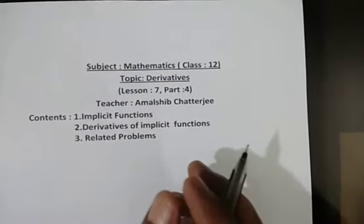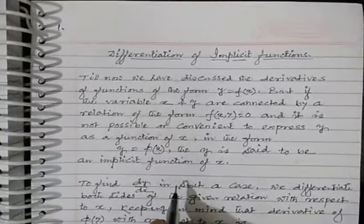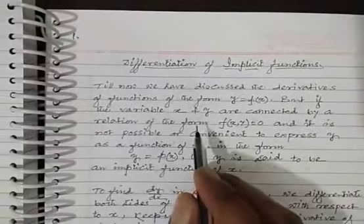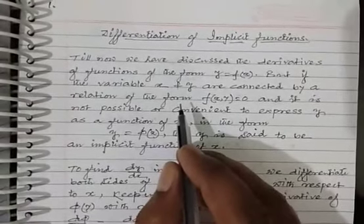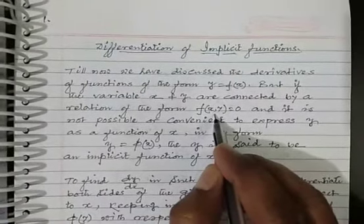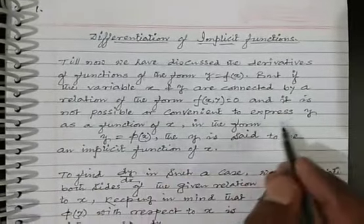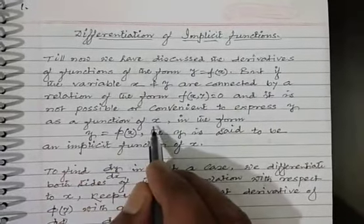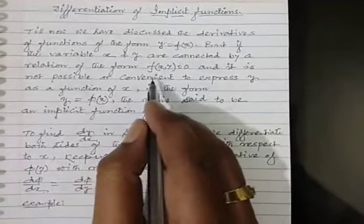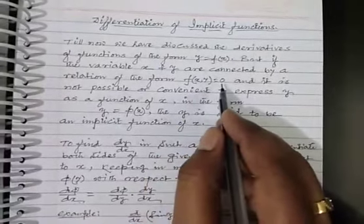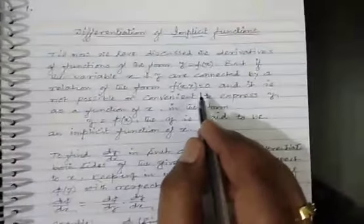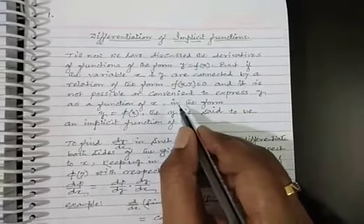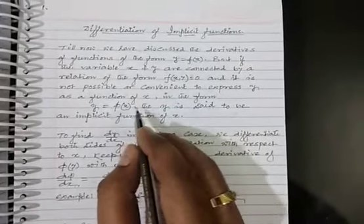What is an implicit function? Till date we have done explicit functions, where y is a function of x — y expressed in terms of x explicitly. But in an implicit function, f(x, y) = 0, and it is not possible or convenient to express y as a function of x. It is a combination of x and y such that it is too difficult or not possible to express y in terms of x.